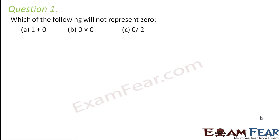Which of the following will not represent zero? One plus zero — what would that be? Zero is the additive identity; when zero is added to anything, the number remains the same. So one plus zero will remain one, so it will not represent zero.